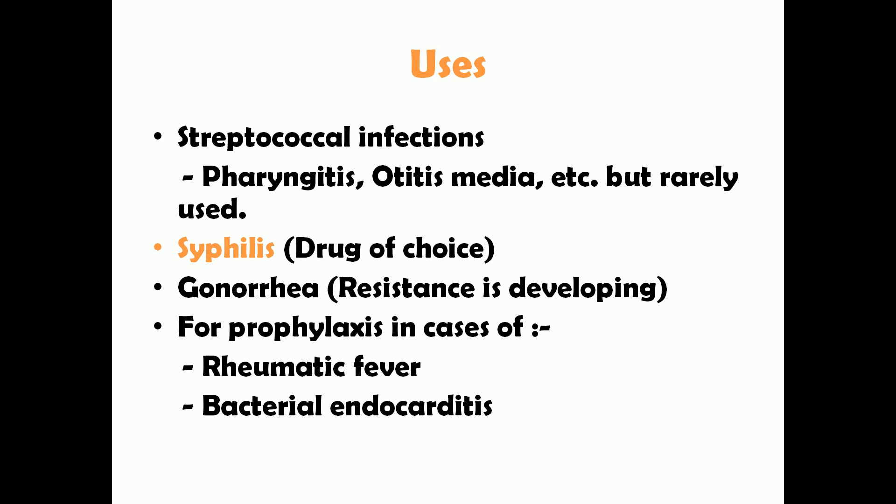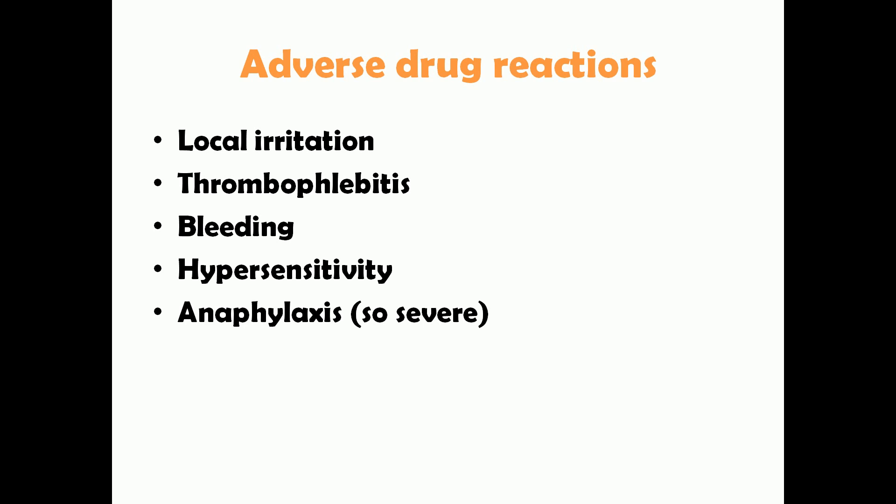Penicillin G can be used to treat streptococcal infections such as pharyngitis and otitis media, but it's rarely used due to the high risk and availability of better drugs. However, in cases of syphilis, penicillin is the drug of choice. For gonorrhea, penicillin G was used for many years, but due to resistance, alternative drugs are now preferred. Penicillin G can also be used for prophylaxis in rheumatic fever and bacterial endocarditis.